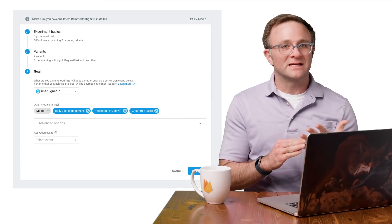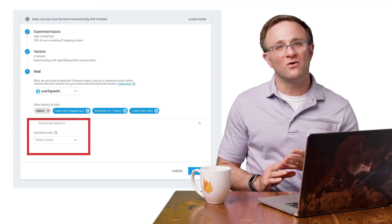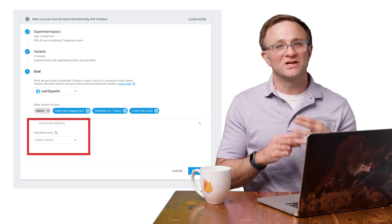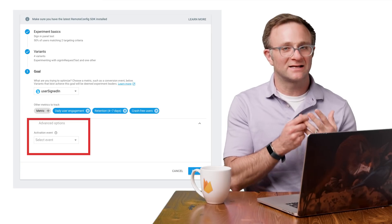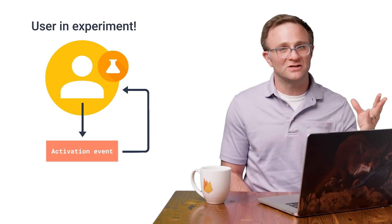Okay, next question. What's up with these activation events? So you might have noticed that when I created a remote config experiment, I kind of skipped over this advanced options section when selecting a goal. Well, hidden inside the section is a dropdown list that lets you select an activation event. So what is an activation event? Glad you rhetorically asked. The general idea here is that for the purpose of measuring an experiment, we won't count a user as being in the experiment until they first trigger this activation event.